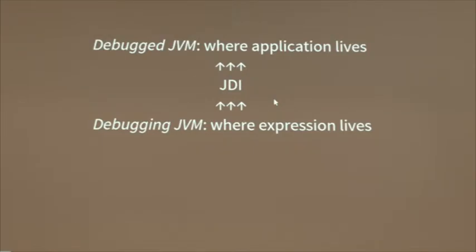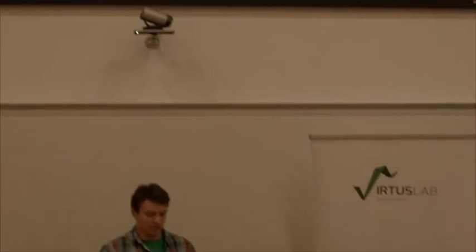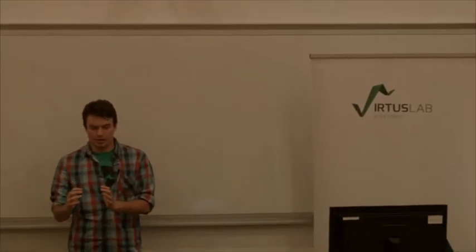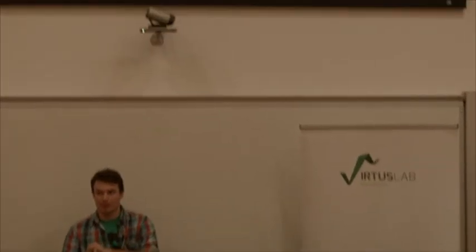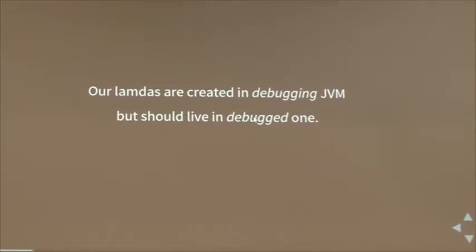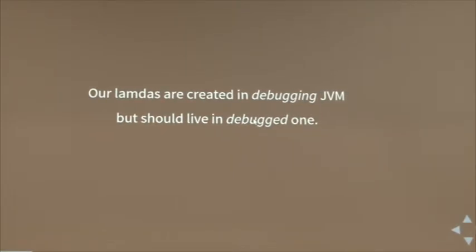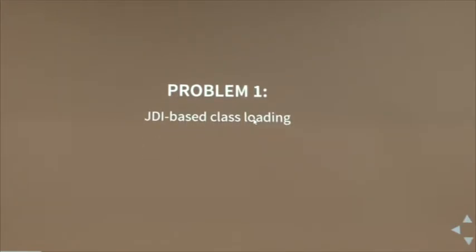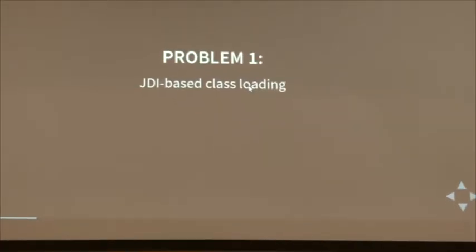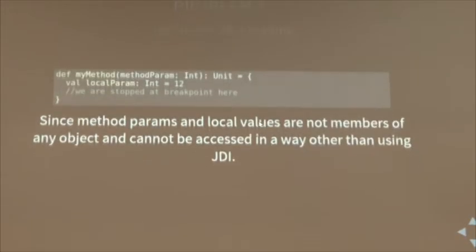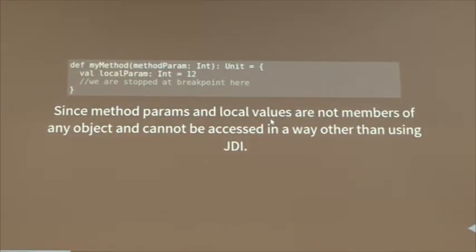The first thing: when we're debugging, there are two JVMs running — the one that's being debugged where our application lives, and the second one is the debugging JVM. They communicate using JDI, another JVM protocol, between these two virtual machines. The problem is: when I create a lambda, I create it in the debugging JVM, but the lambda should be called in the debugged one. Somehow this lambda should appear in the debugged machine because it's not present at the start. That's the first problem: JDI-based class loading.